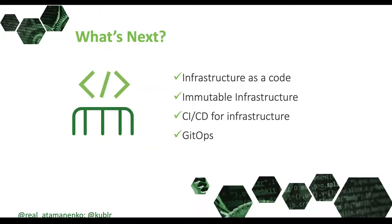After we are done, what are our next steps? First, we need to strive to use infrastructure as code, immutable infrastructure, CI/CD for infrastructure, and GitOps. Infrastructure as code means that we will declare our infrastructure as code so that we can easily rerun scripts to reproduce our infrastructure or make a copy of it. This allows us to store our infrastructure deployment scripts in a source code repository so that we can track history, track changes, and modify them the way developers usually modify their code.